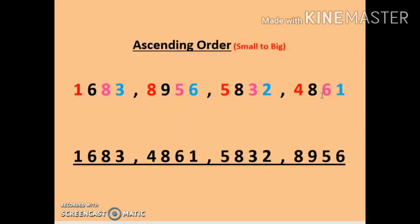Rule number 2 says when the number of digits are the same, then you have to compare the position. We start with the thousands place, then hundreds, then tens, and then ones.